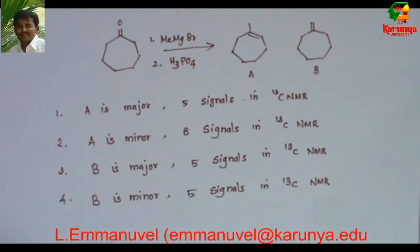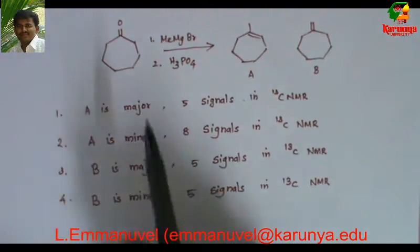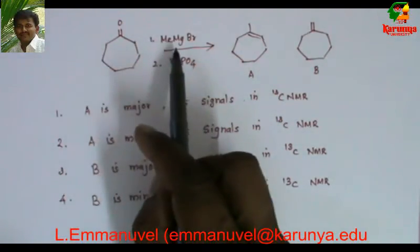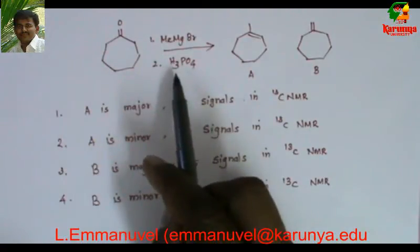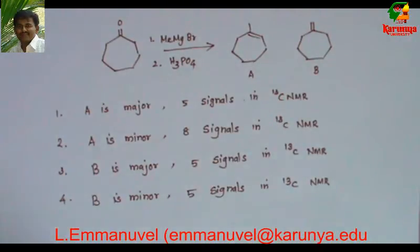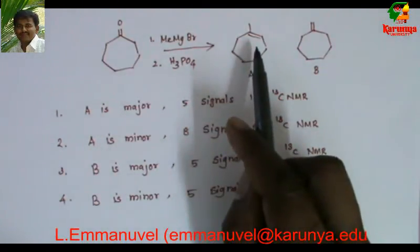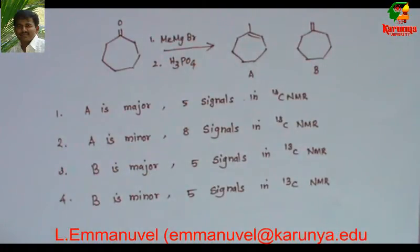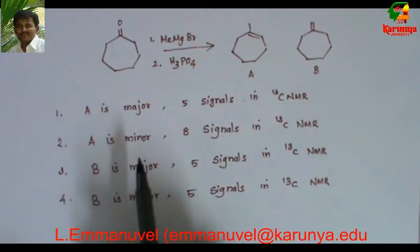Today we are going to solve a problem on E1 elimination and Zaitsev's rule. The problem is: when this ketone is treated with methyl magnesium bromide followed by H+, we get two products A and B. A is a tri-substituted olefin, and B is a disubstituted exocyclic olefin. About this reaction, four statements have been given.